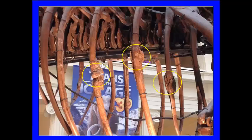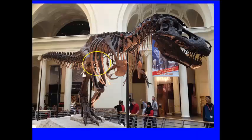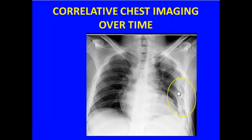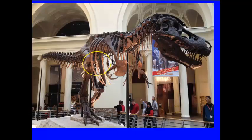Being a radiologist, I was walking through the Chicago Museum and saw the big dinosaur — I think that's called Sue. I noticed three ribs that had bony callus formation, indicating they were fractured in a traumatic event. So this is correlated imaging over time: 65 million years later we can still see the evidence of an injury. Thanks.